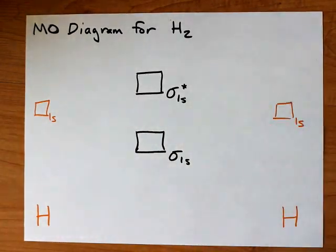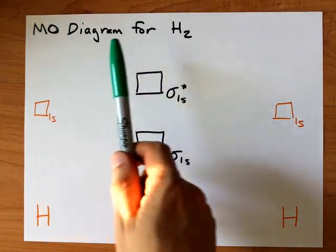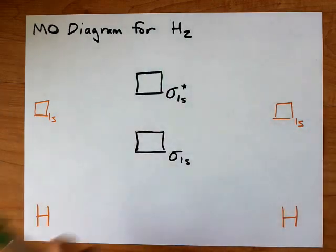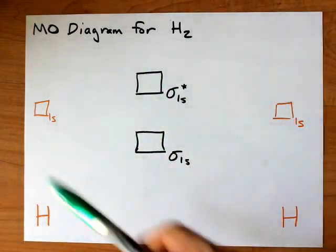A little Google search tells me that the molecular orbital diagram for the hydrogen molecule is actually in high demand. So here we are.